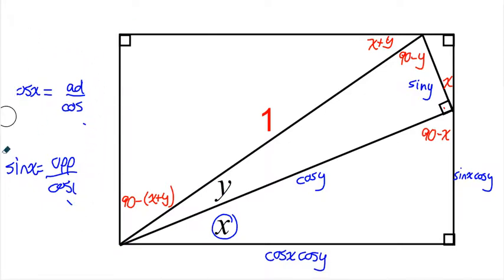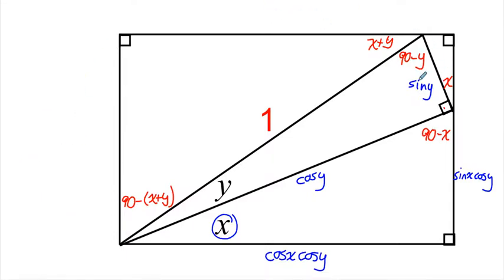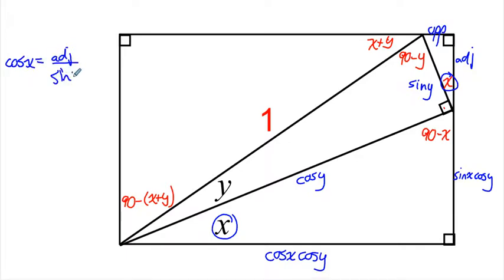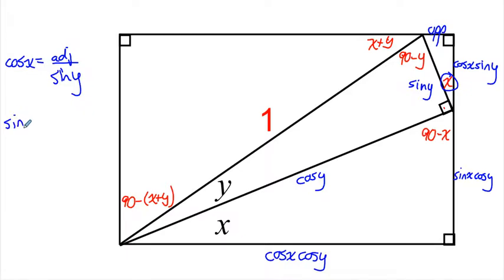Now let's look at the little triangle in the top right. If x is my reference angle, cos x equals adjacent over sin y, so the adjacent must be equal to cos x sin y. I can replace that adjacent side with cos x sin y. For the opposite side, sin of x equals opposite over the hypotenuse, which is sin y. Multiplying sin y over, I find that the opposite side up here is equal to sin x sin y.